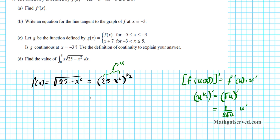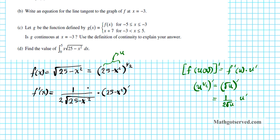So f prime of x is going to be the derivative of the outer function holding the inner fixed, which is 1 over 2 root of 25 minus x squared, times the derivative of the inner function, which is negative 2x. This 2 and that 2 cancel out, so our final answer is negative x over the square root of 25 minus x squared. That's f prime.